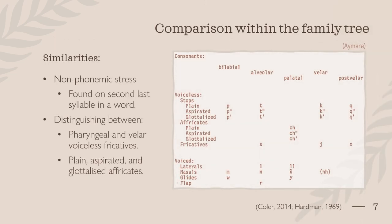Jacare and Cacchi are more alike with each other than they are with Aymara, though Cacchi is more similar to Aymara than Jacare is. As for similarities across all three languages, none of them have phonemic stress, and the stress in each language falls on the second-to-last syllable. Additionally, all three languages distinguish between both pharyngeal and velar voiceless fricatives, as well as plain, aspirated, and glottalized affricates.